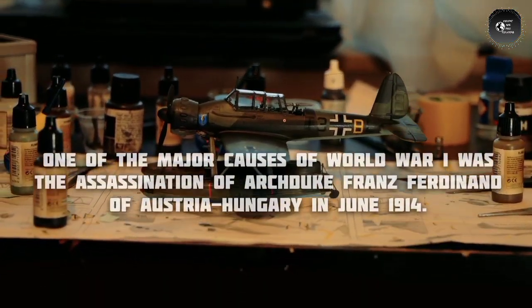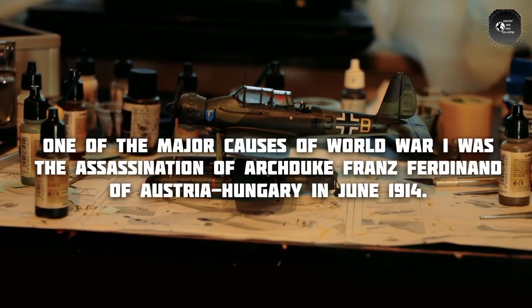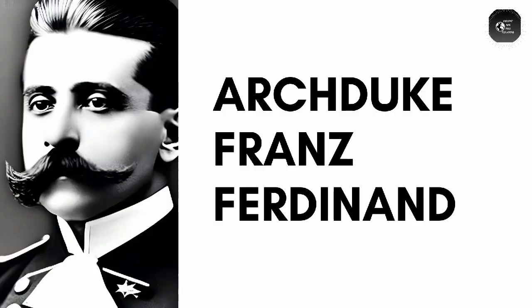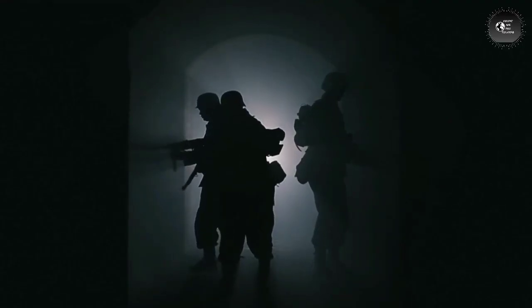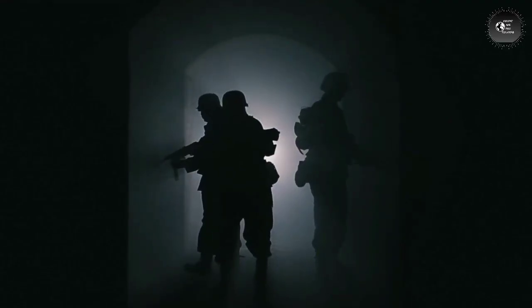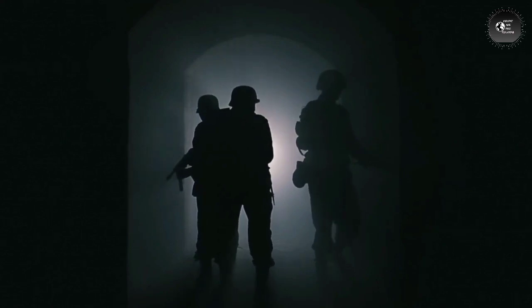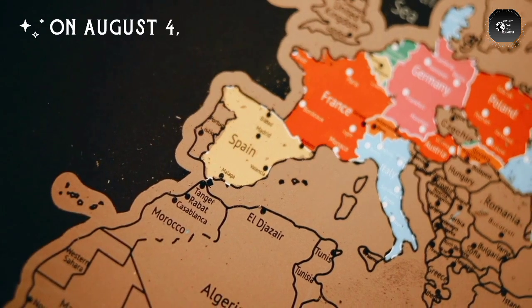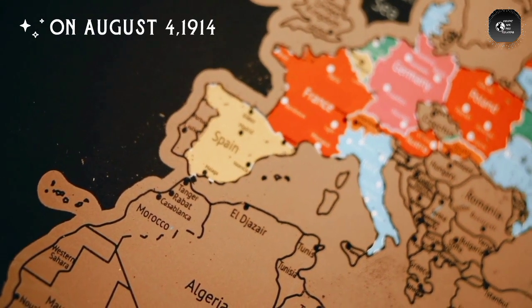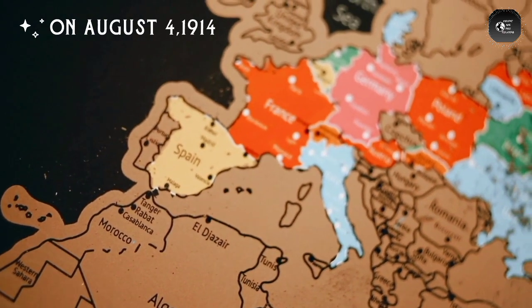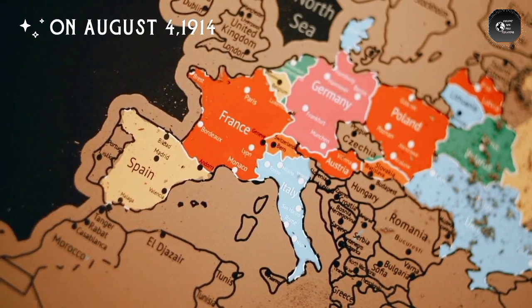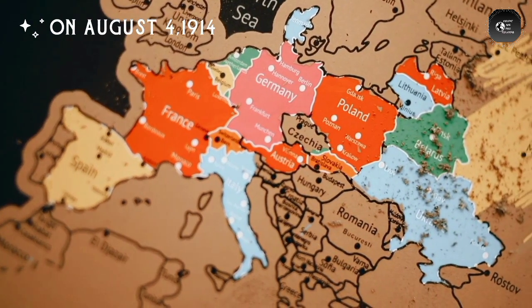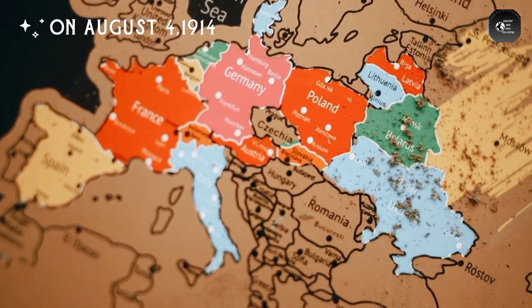One of the major causes of World War One was the assassination of Archduke Franz Ferdinand of Austria-Hungary in June 1914. This event triggered a chain reaction of alliances and mobilizations that quickly escalated into a full-scale war. On August 4, 1914, Germany declared war on Belgium and invaded France. Britain, which had a treaty with Belgium, declared war on Germany in response.